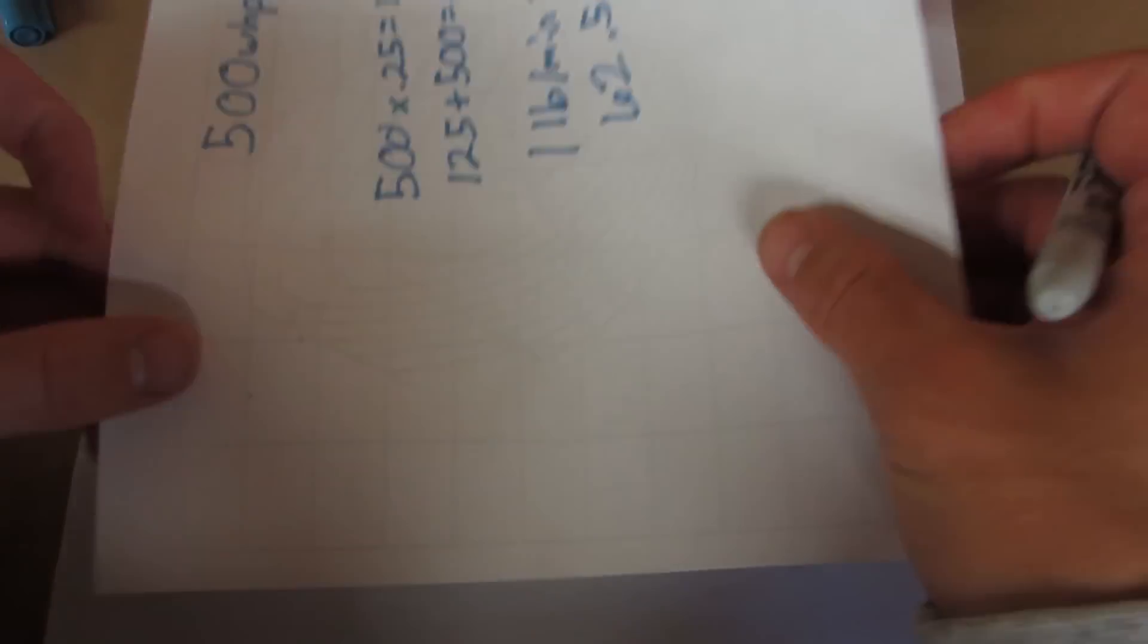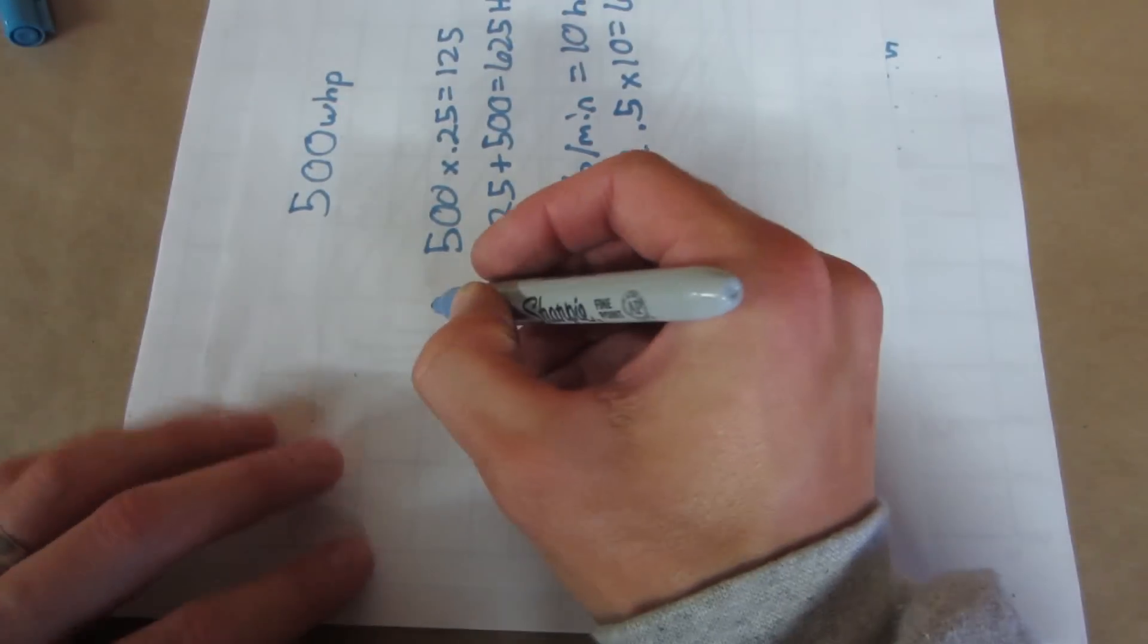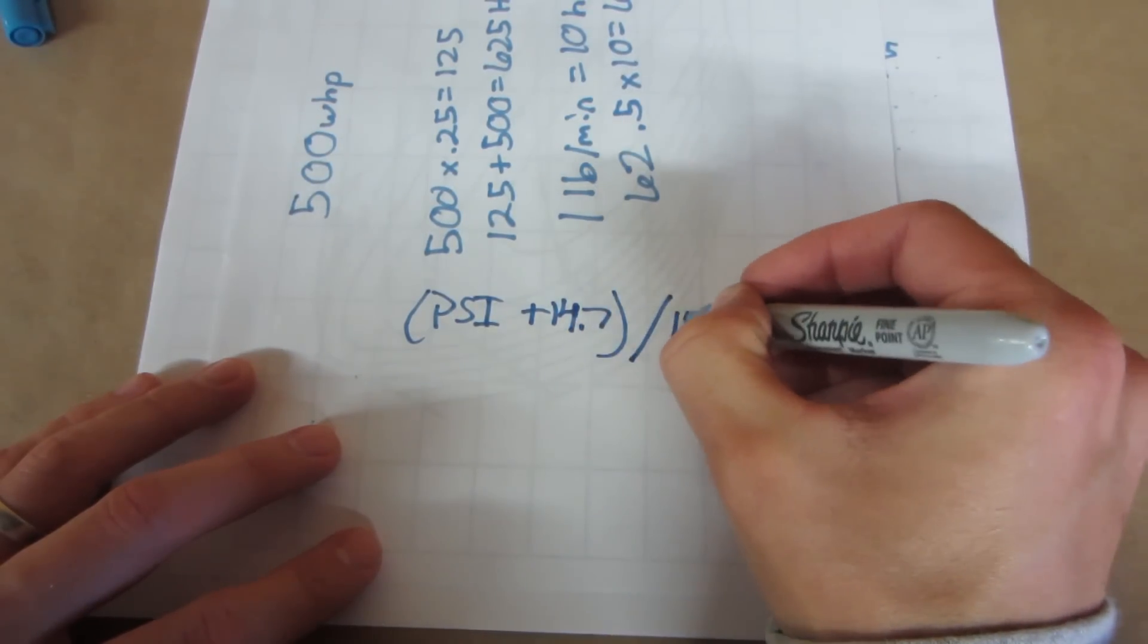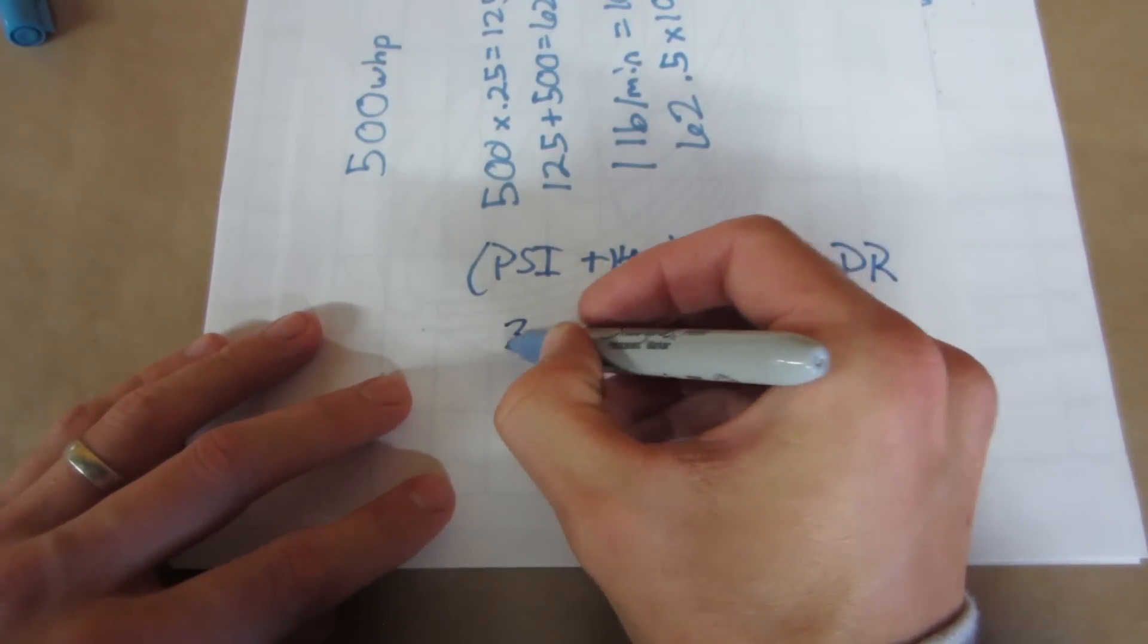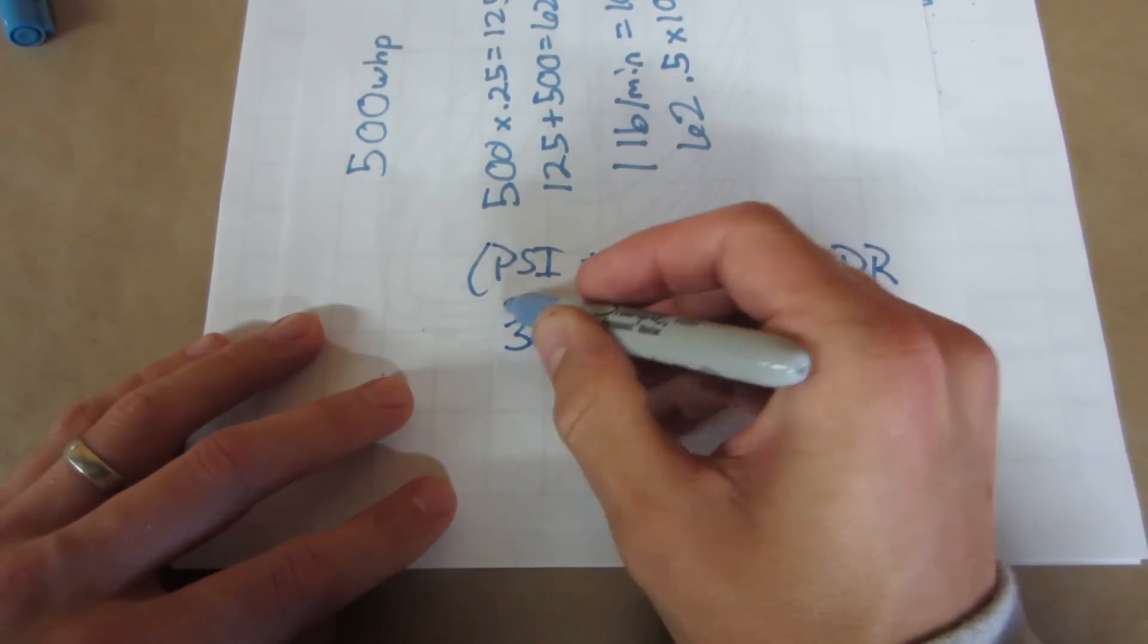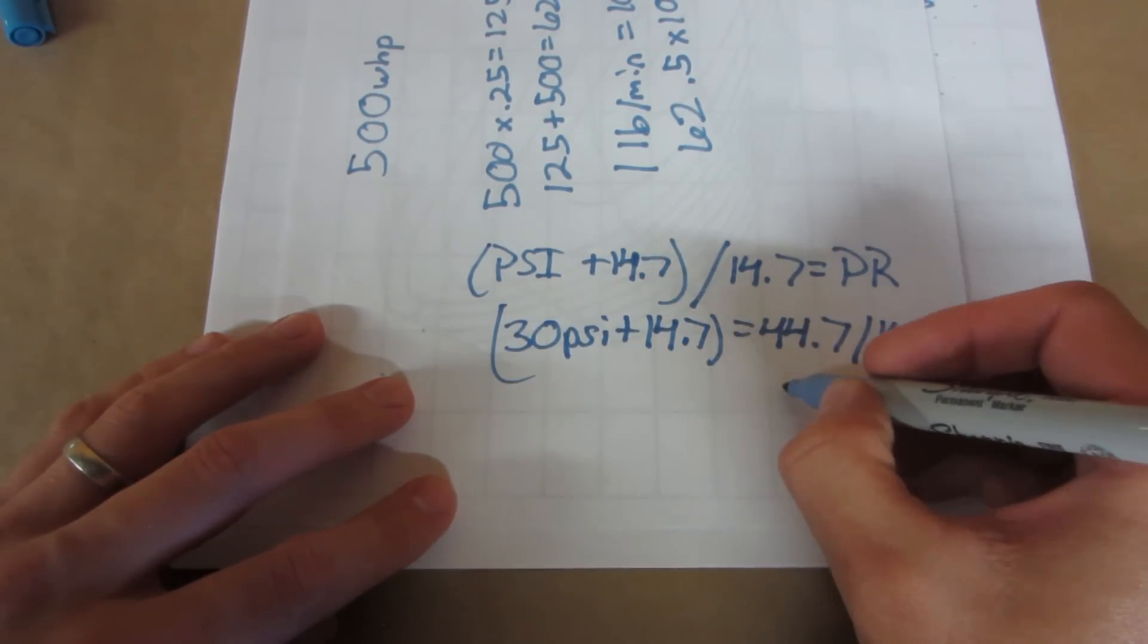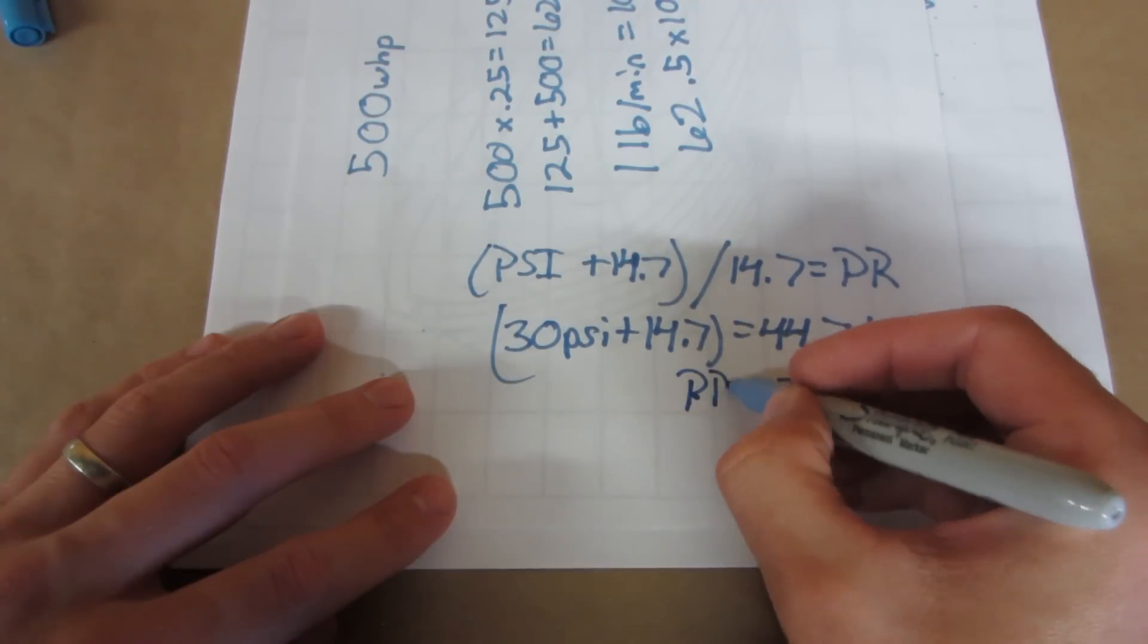Now you have two choices to pick your pressure ratio. If you have a boost pressure in mind, we will calculate that now. Pressure ratio is expressed by PSI plus 14.7 divided by 14.7 and that equals your pressure ratio. To find the pressure ratio, take the amount of boost that you intend to run and add 14.7. For instance, if we were running 30 pounds of boost plus 14.7 that equals 44.7. Now divide that by 14.7 and that equals 3.040.